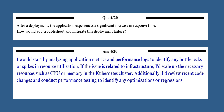Here's the answer. I would start by analyzing application metrics and performance logs to identify any bottlenecks or spikes in resource utilization. If the issue is related to infrastructure, I would scale up the necessary resources such as CPU or memory in the Kubernetes cluster. Additionally, I would review recent code changes and conduct performance testing to identify any optimizations or regressions.